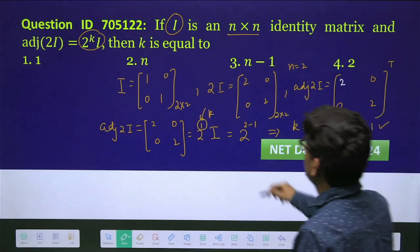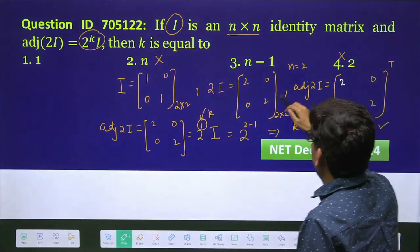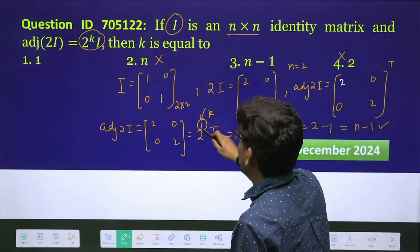So these two are wrong and we have got k=1.